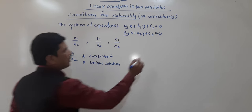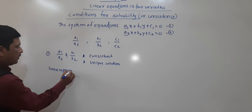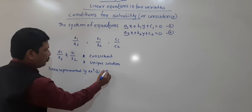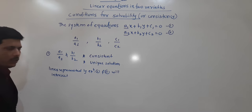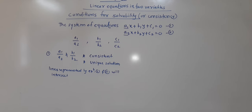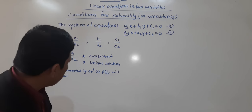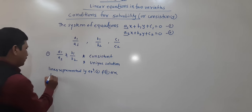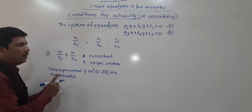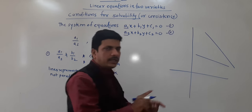Lines represented by equation 1 and equation 2 will intersect at one point. We can also say they are not parallel. Not parallel means they will intersect. Suppose this is the Cartesian plane — the two lines will definitely intersect at a unique point.